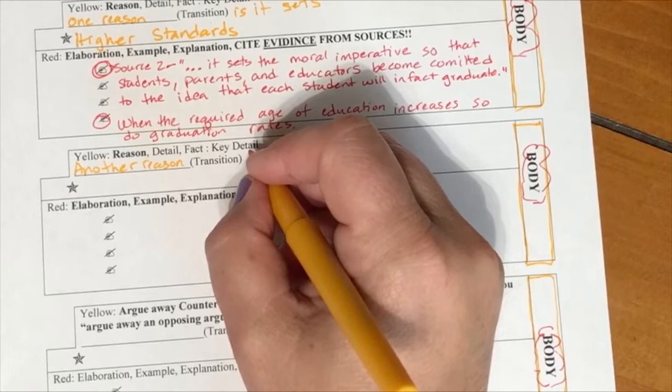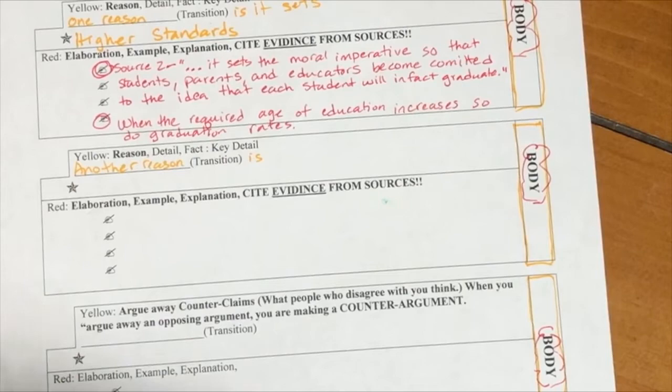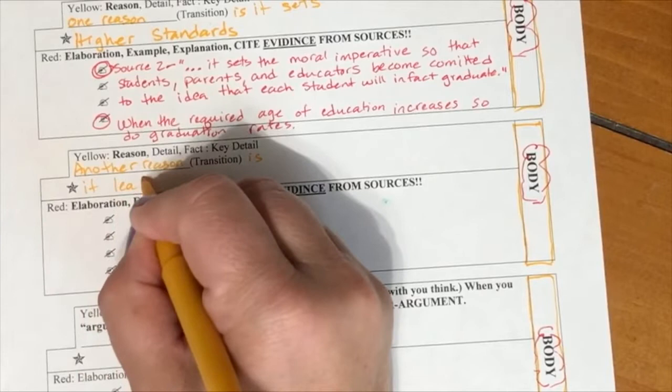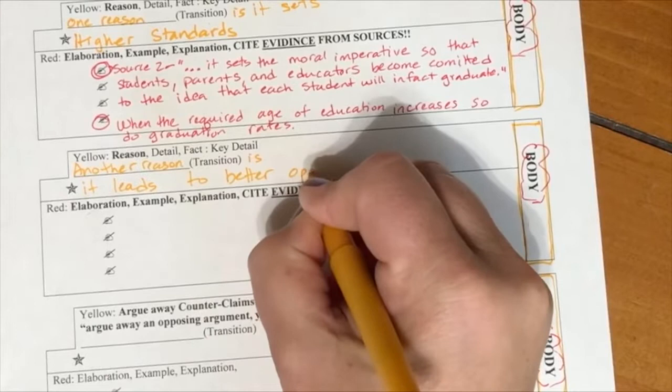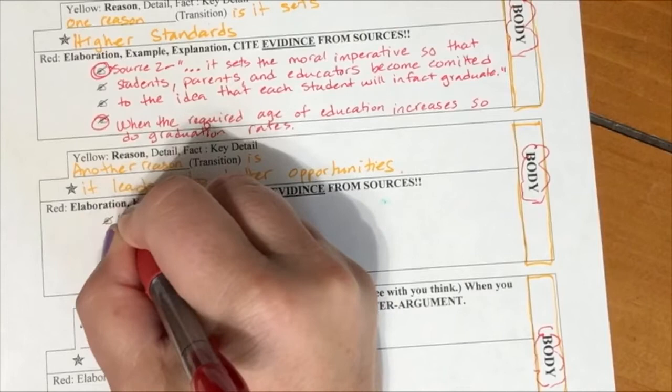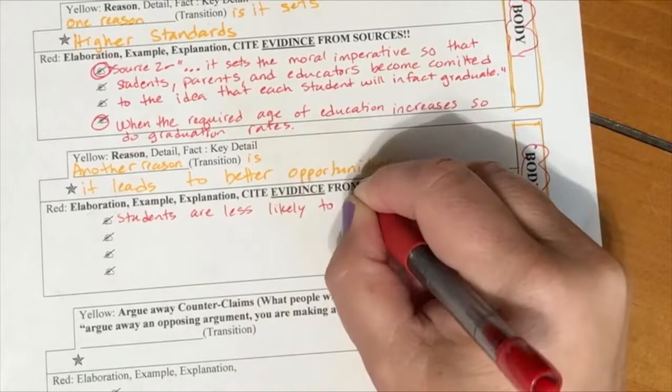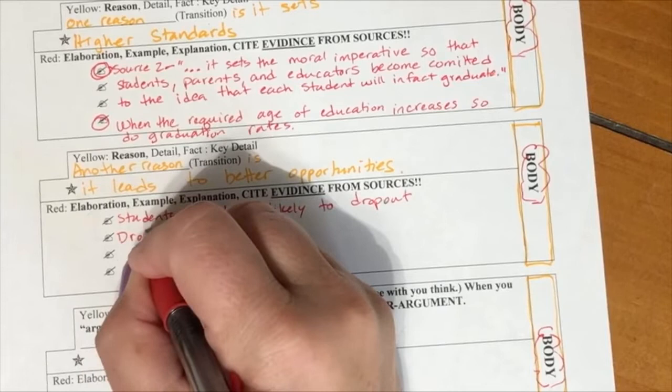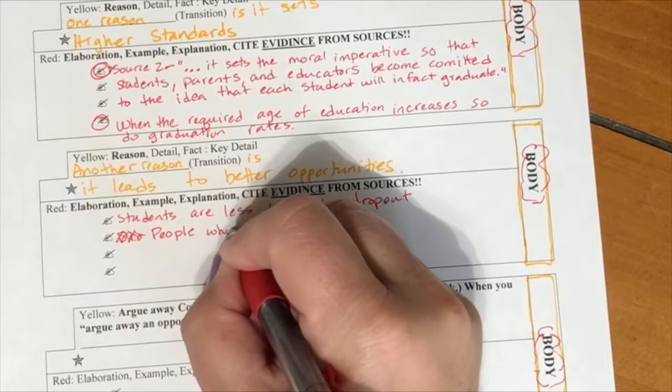What are some examples or evidence that were in the text for that? In some of the sources, in multiple sources, it says that students are less likely to drop out. I think that was in source four. If the age of required education is increased, in source four, people who don't have high school diplomas have lower job satisfaction. In the graph, it says that graduates make more money. That's in source three. You can find lots of information in these sources about better opportunities for students who stay in school and that when the age of required education is increased, more students stay in school.